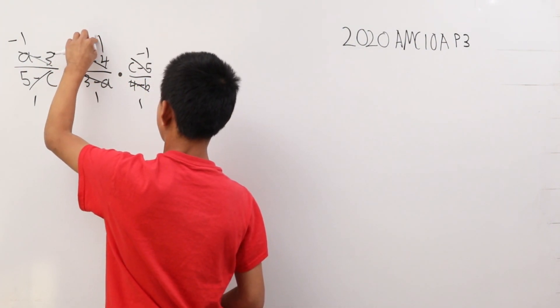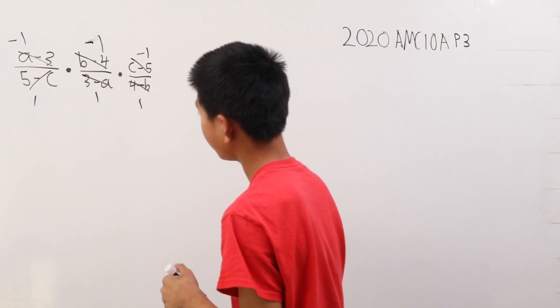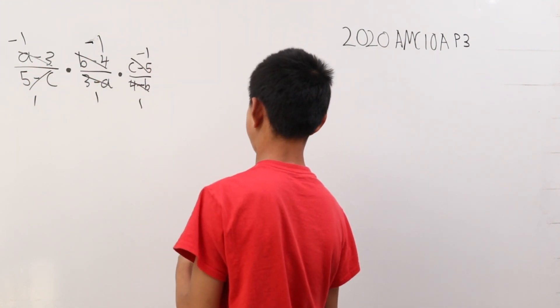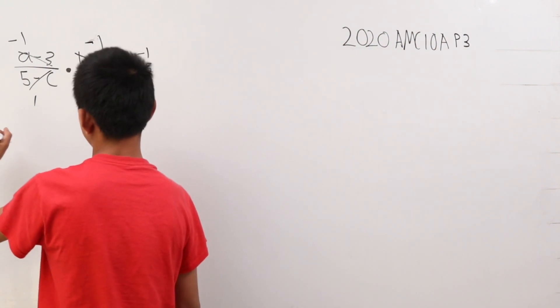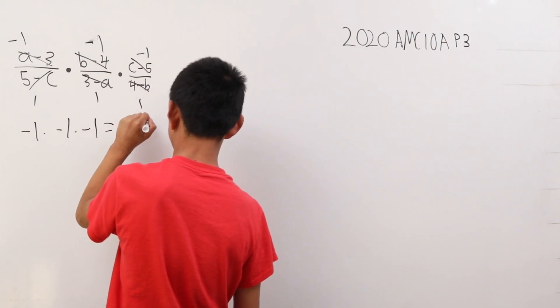And this is just the way that you evaluate it. This is the general idea of how you evaluate this. Now it's just negative 1 times negative 1 times negative 1. That's going to be negative 1 times negative 1 times negative 1, which is negative 1.